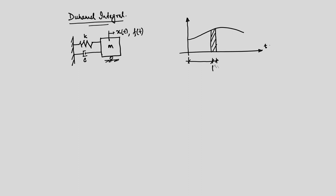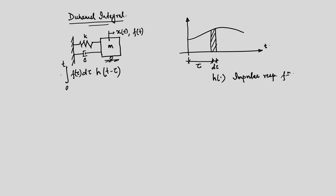So at a distance tau, the forcing function is f(tau) d(tau). At this point, what we do is we put our h of t, which at this point will be t minus tau. This is the impulse response function. We multiply this by h(t minus tau) and then integrate from 0 to t, and what we get is basically the response at time point t. That is the expression we have derived.